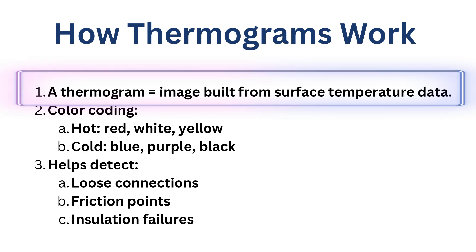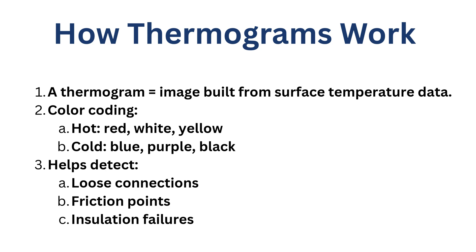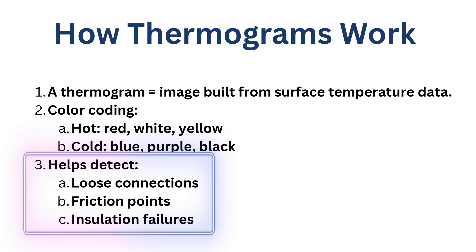How will you see this image? Hot areas will mostly show up in colors like red, white, or yellow, and cooler areas will mostly be represented by blue, purple, or black. This color coding makes it very easy to identify hot spots or abnormal areas that could be due to loose connections, friction in a bearing, or motor insulation failure. If you tried to see all these things through naked eyes, it would be impossible. That is how IR technology and IR cameras help us detect failures well before they occur.